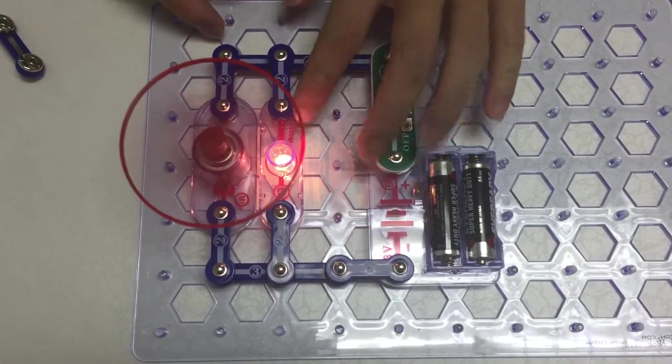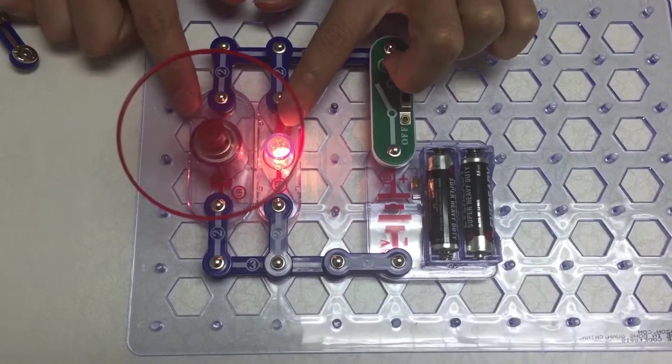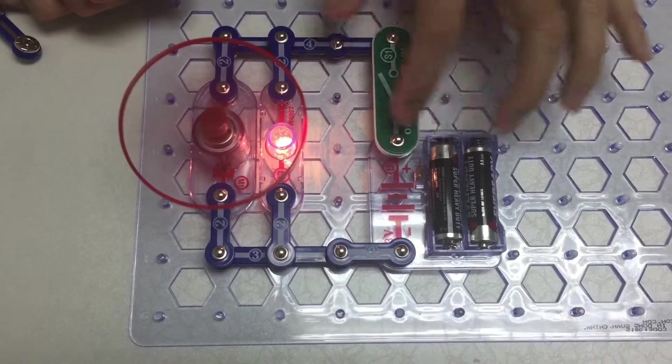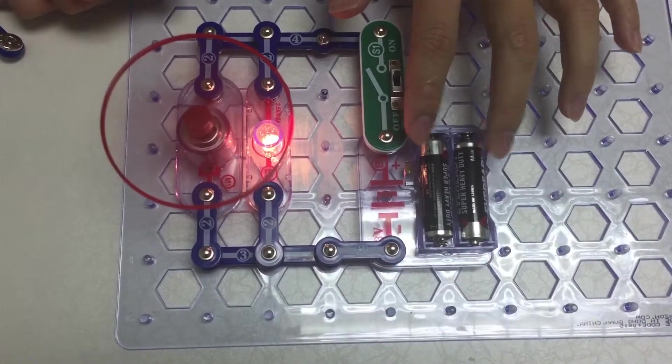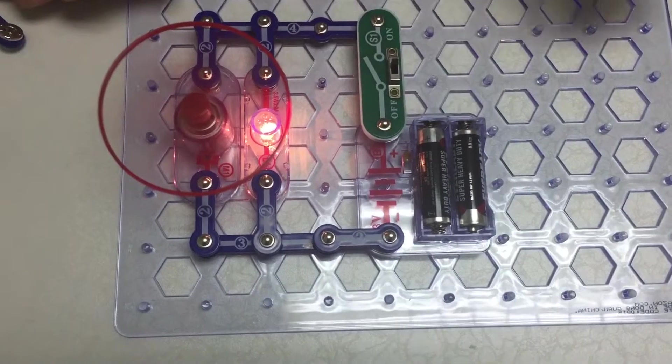That is why the components, the lamp and the motor, are drawing the voltage from the battery compartment here.